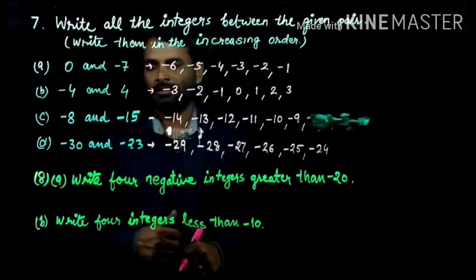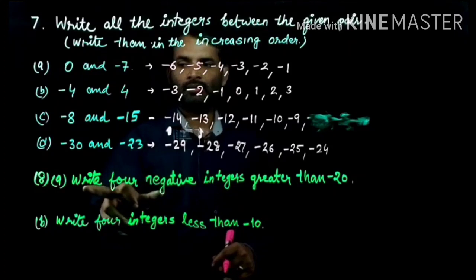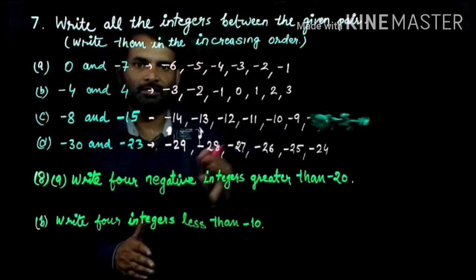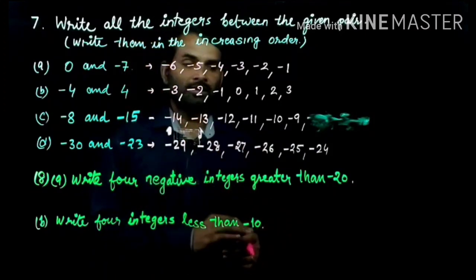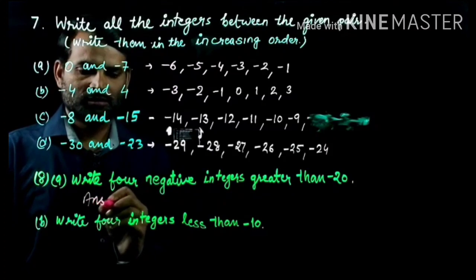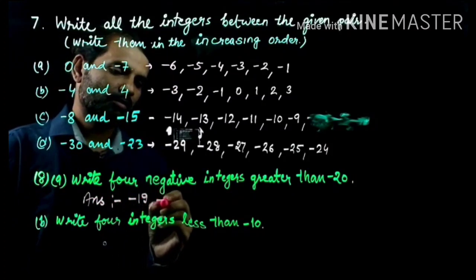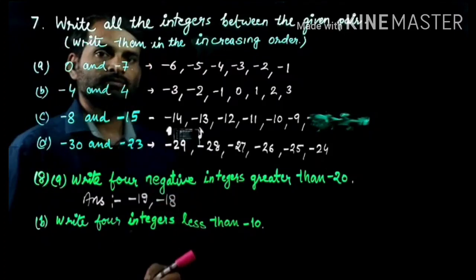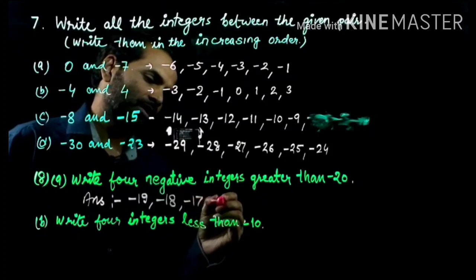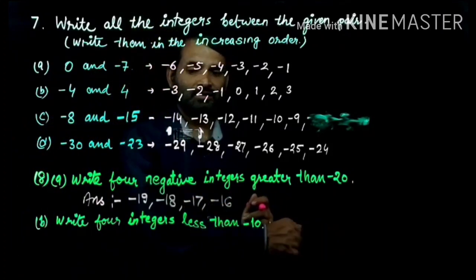Question number 8: write 4 negative integers greater than minus 20. Greater than minus 20, only negative. So the answer is: minus 19, minus 18, minus 17, minus 16 — up to minus 1. All these numbers are greater than minus 20.